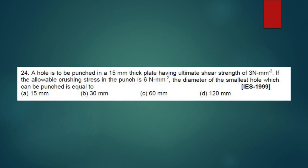A hole is to be punched in a 15mm thick plate having ultimate shear strength of 3N per mm square. If the allowable crushing stress in the punch is 6N per mm square, the diameter of the smallest hole which can be punched is equal to. For this question we will consider punching and shearing - crushing stress for punch and shearing stress for that plate material.